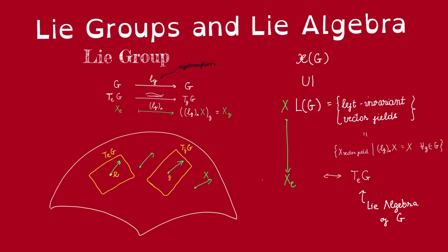Conversely, it is easy to see that starting with a vector v in the tangent space at the identity, we can get an induced vector field that is left invariant, defined as follows: at every g, this vector field is the push forward of v under the left multiplication by g map. Clearly by definition it is left invariant. This gives us a bijection between the set of left invariant vector fields on the Lie group G and the tangent space to G at the identity.